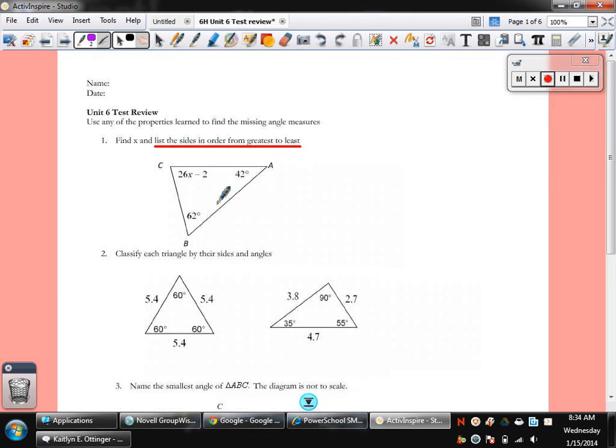I know that 62 and 42 add up to 104, which means that there's only 76 degrees left over here. So, 2X minus 2 equals 76. 2X equals 78, and so X equals 3.